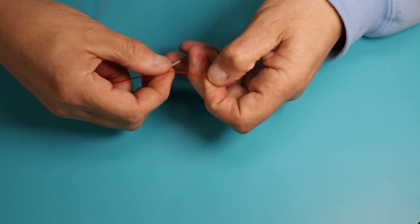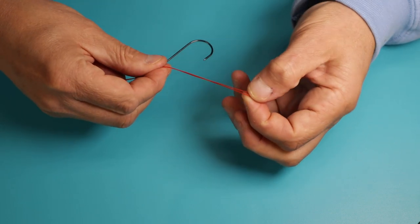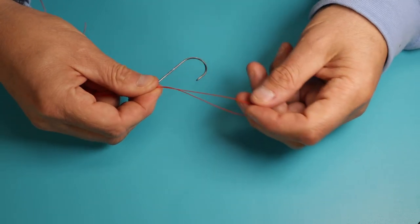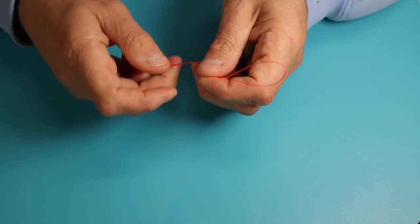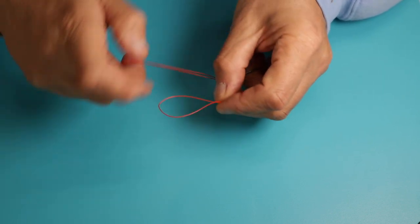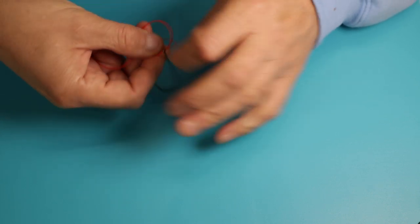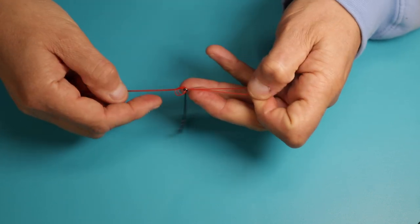When you pull the doubled over tag end through the eye of the hook, you need enough line that it's longer than the item you're tying. So then it's as simple as an overhand knot. Form an overhand knot, pull it through,